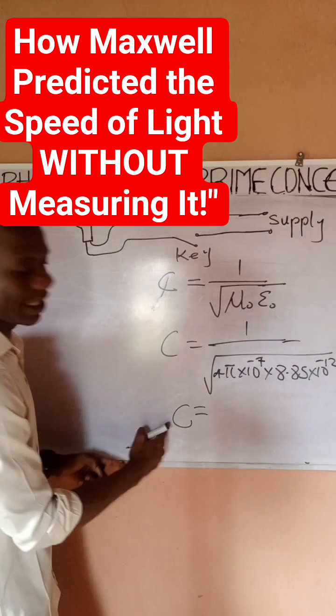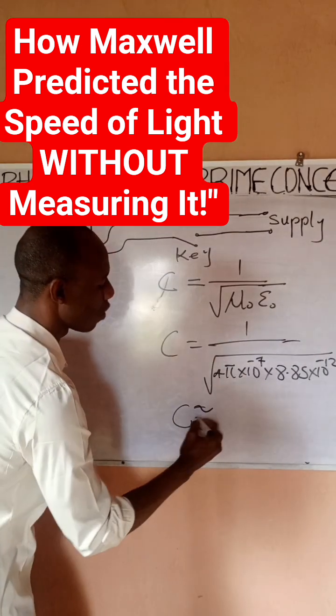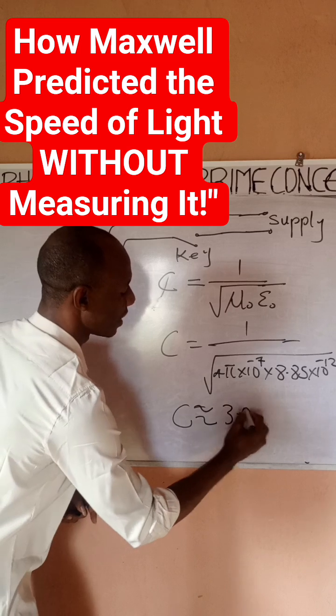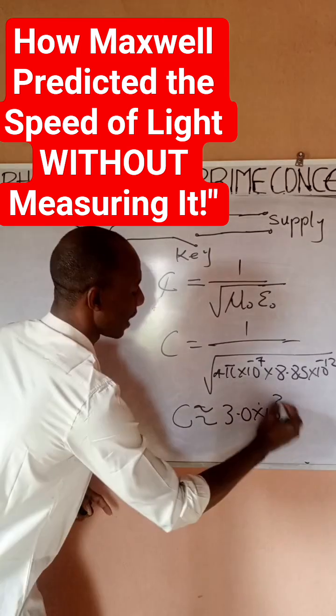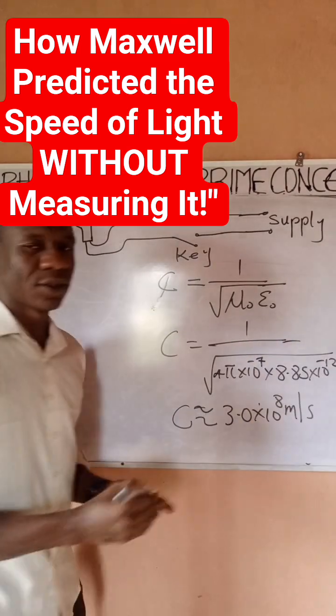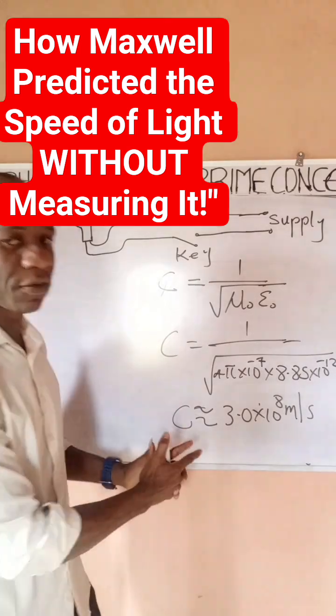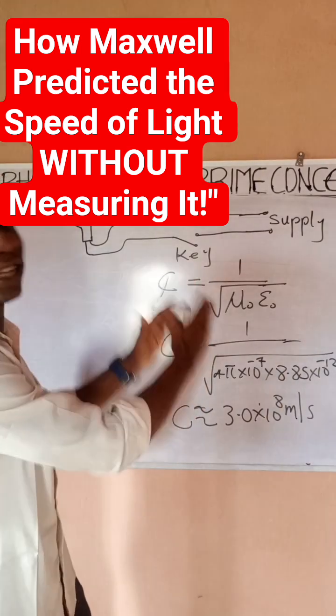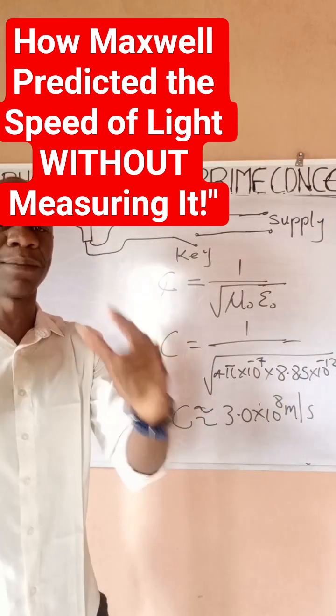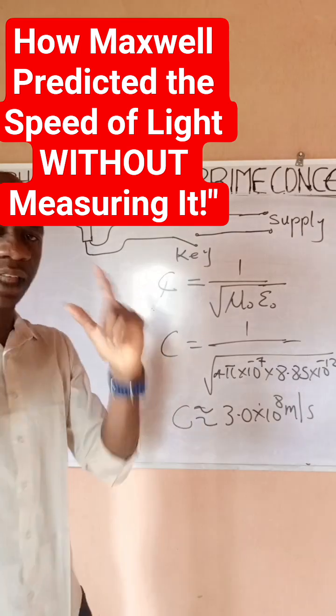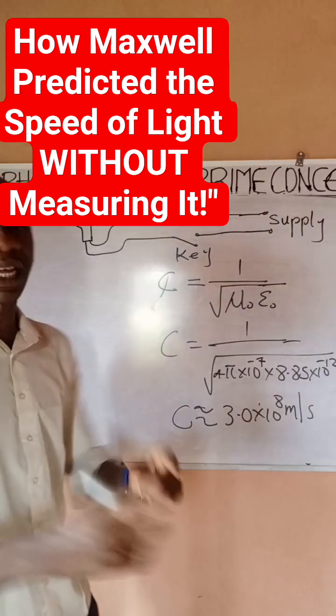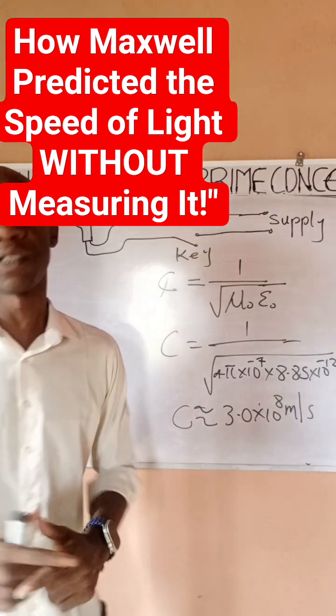Now if you do this calculation, you would arrive at the value c approximately equal to 3.0 times 10 to power 8 meters per second. So this is what we know as speed of light, and this was calculated in electromagnetism by James Clark Maxwell. Thanks, I believe this concept is very clear. Thanks for watching, this is Prime Concept.